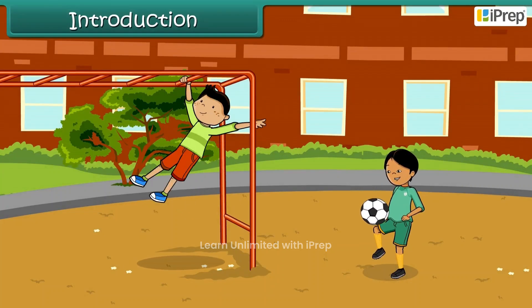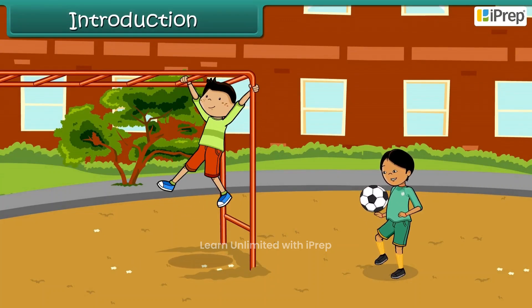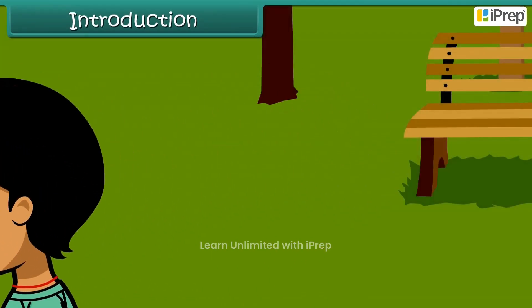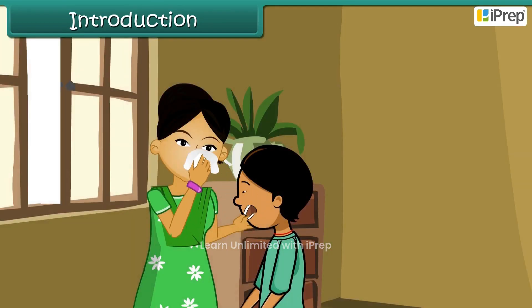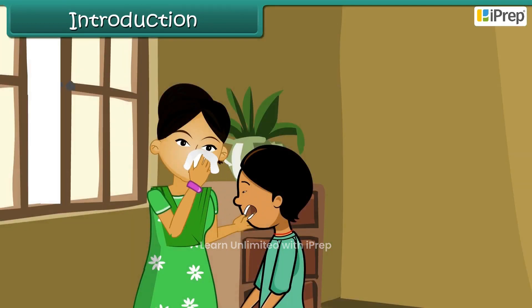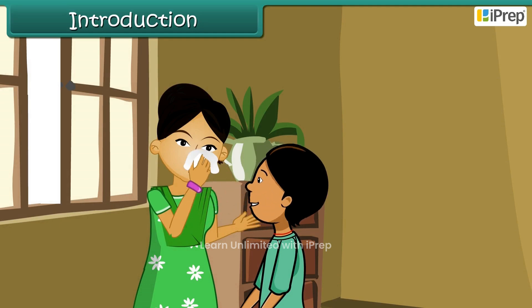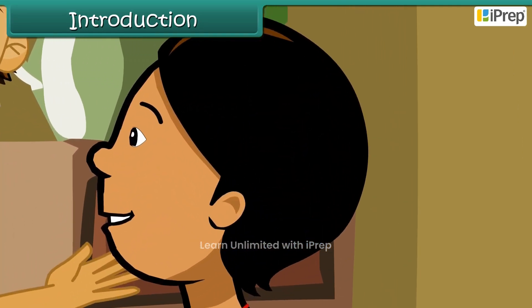Bholla was playing when he got something in his eye. He rushed back to his home where his mother blew air in a clean handkerchief and quickly kept it on Bholla's red eyes. She repeated it four to five times, and by that time Bholla was much relieved.